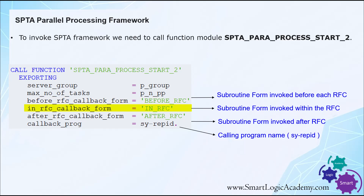In the in RFC callback form, this subroutine is called by the SPTA function module after work packets are created. In this subroutine, we can use our own RFC enabled function module or custom code to process each work packet. In the after RFC callback form, we have to collect all the results or the processed data. In short, before RFC is responsible for creating packets, in RFC is responsible for executing logic in parallel via RFC calls, and after RFC is responsible for collecting processed data.